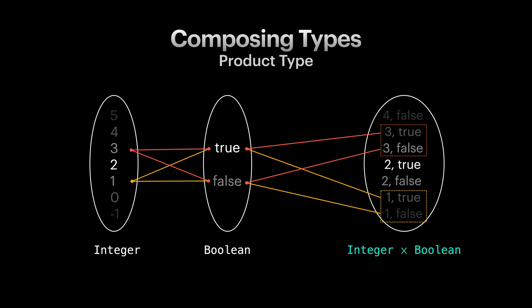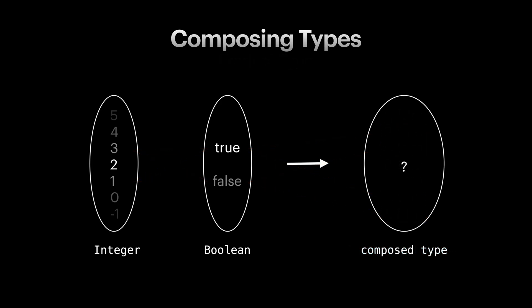Alright, product type is one way to create composite types. But what other ways can we compose integer and boolean? Well, another way can be putting every value from both types next to each other in our composite type. So our composite type contains all integer values and all boolean values.